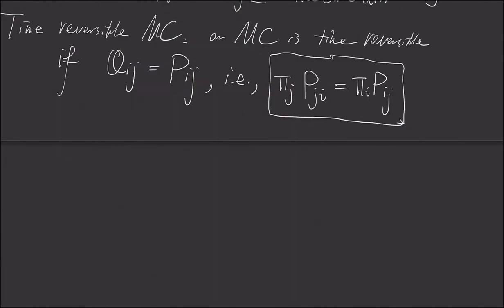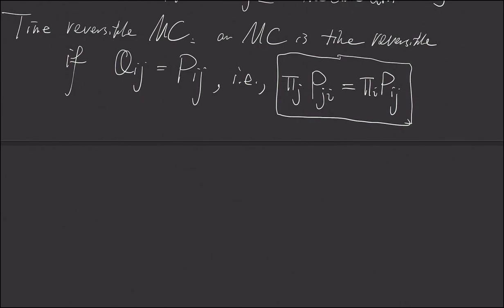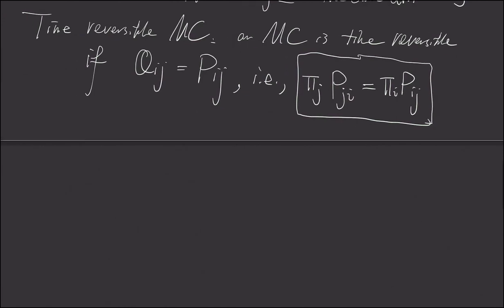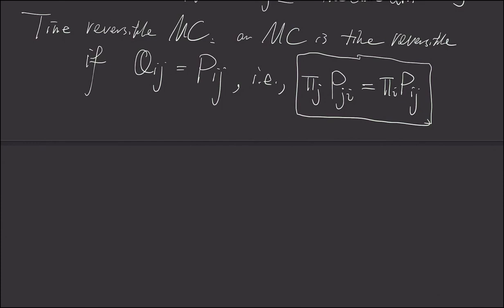If we try to interpret this equation, and we look at each term in this equation, and because, keep this in mind, π is the same distribution. It's just that π_i may not be π_j, but they are indeed the same distribution.